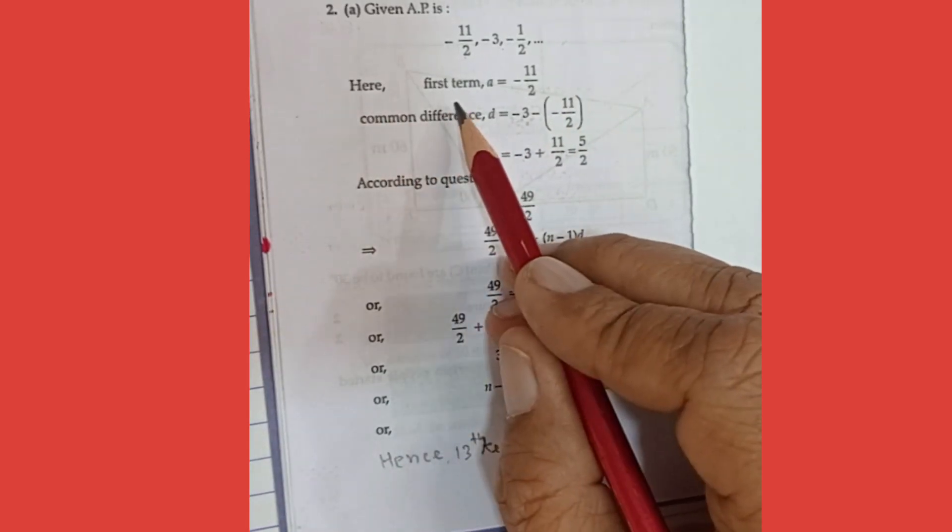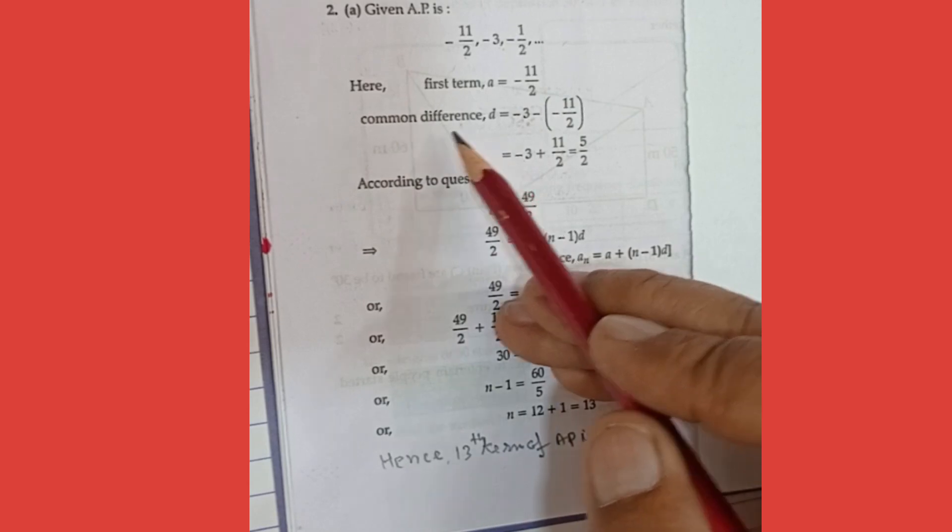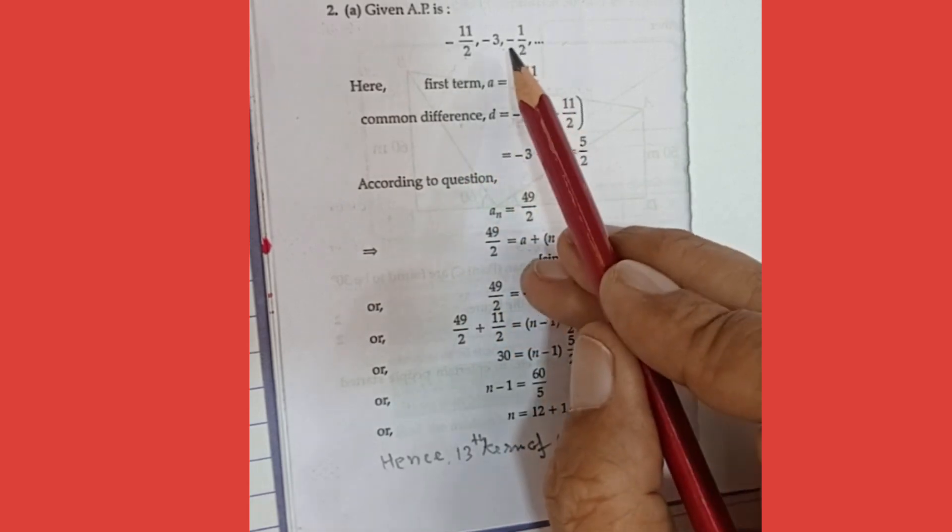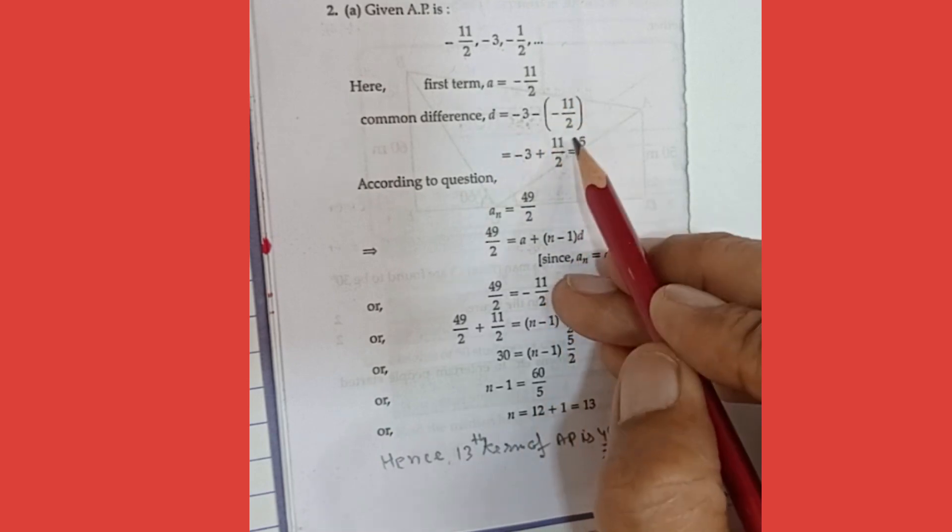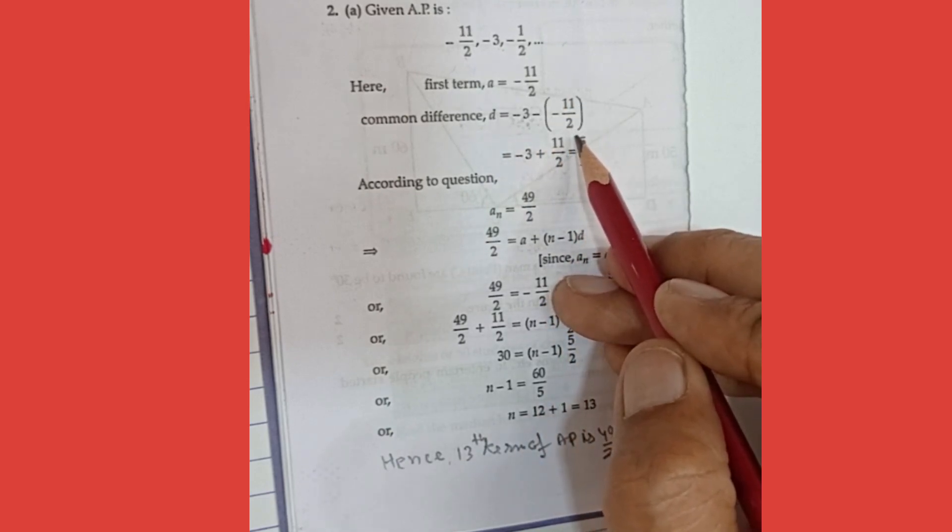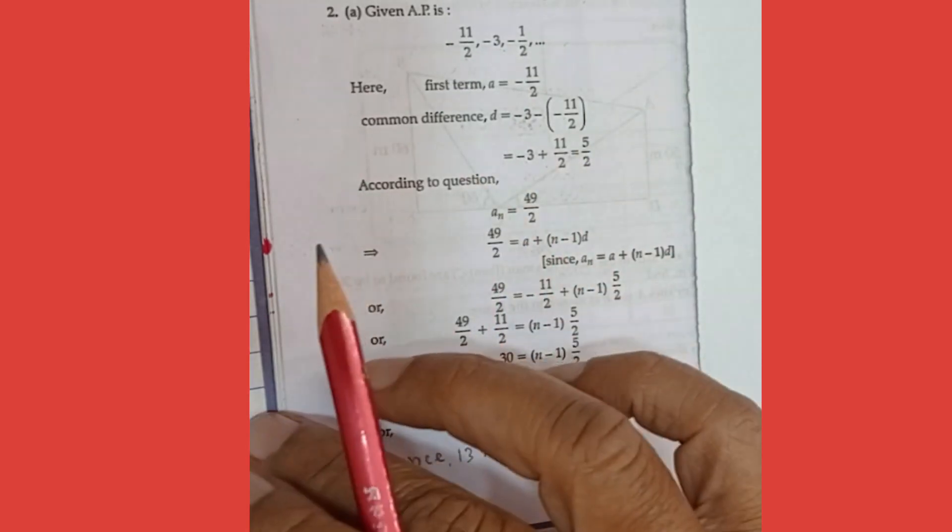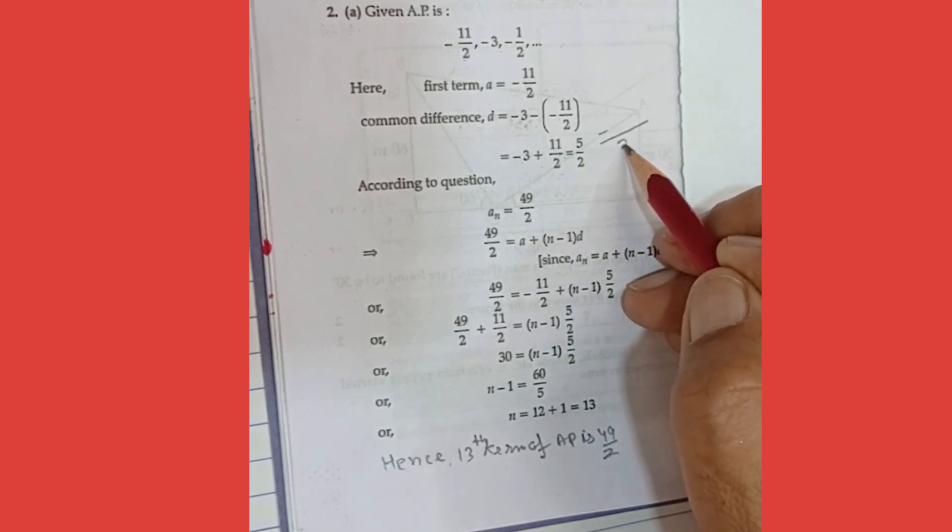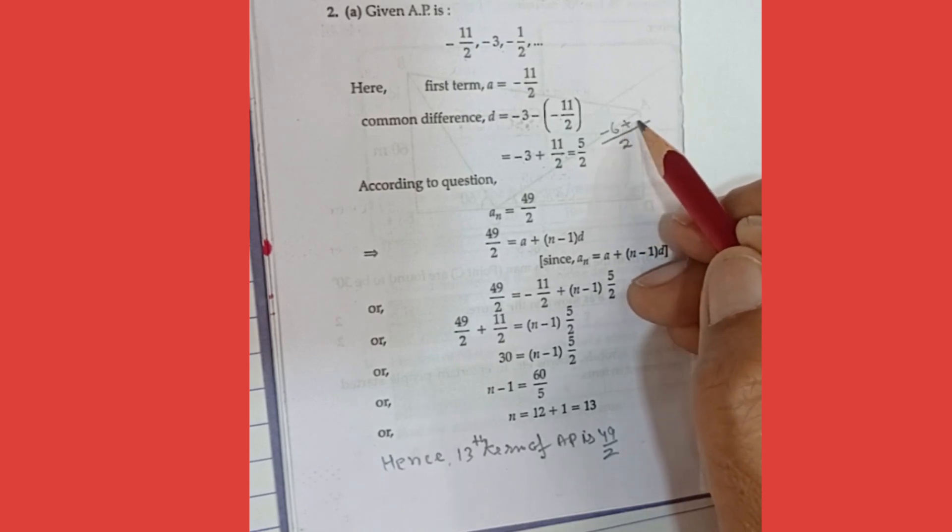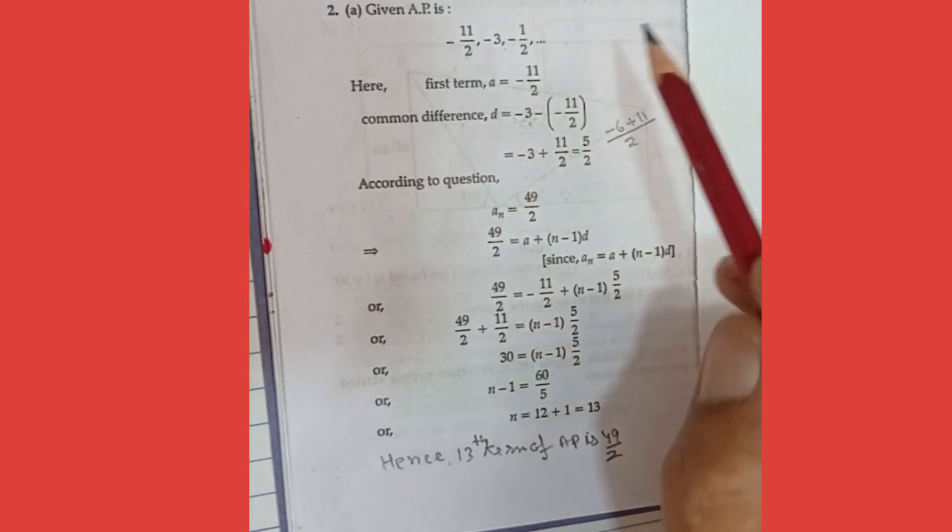So here, first term A is equal to minus 11 upon 2. And the common difference is calculated by deducting first term from second term. So minus 3, then put minus sign here, again in bracket minus 11 upon 2. Now this minus minus become plus. Now you take the LCM, 2 is the LCM, minus 6 plus 11. So 11 minus 6, that is 5 upon 2.